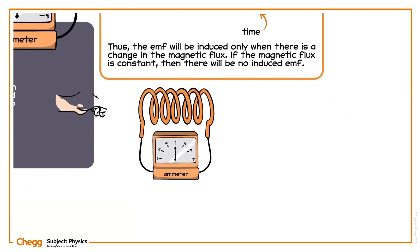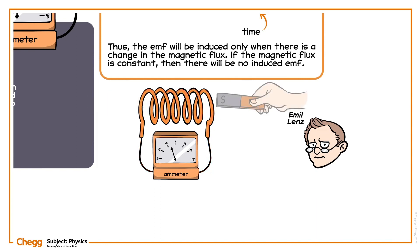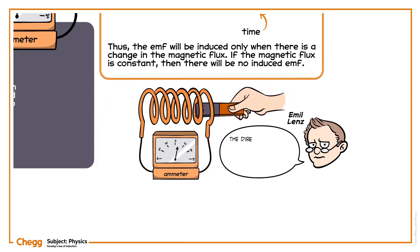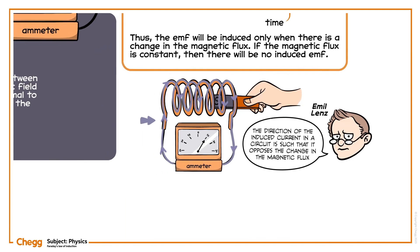Due to this induced EMF, a current will be induced in the coil of the wire. The direction of the induced current is determined by Lenz's law. According to Lenz's law, the direction of the induced current in a circuit is such that it opposes the change in the magnetic flux.